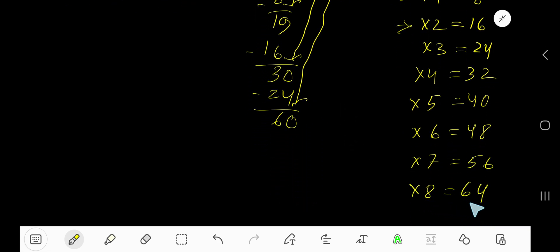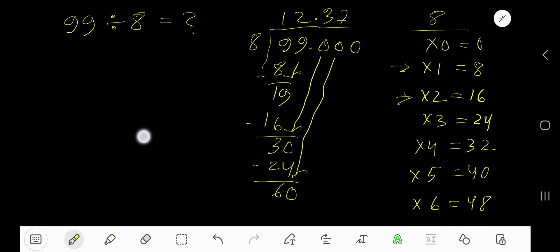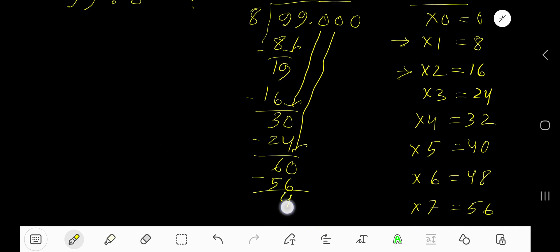8 times 8 is 64, which is greater, so 7 times 56. Write 7. 7 times 8 is 56. Subtract, you get 4. Bring down this 0. 8 goes into 40 how many times? 5 times.